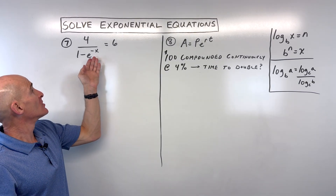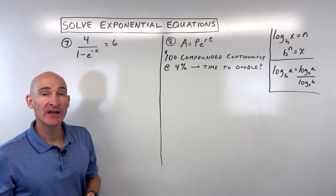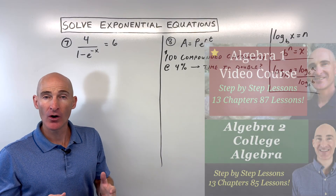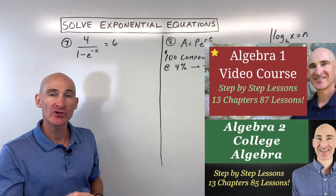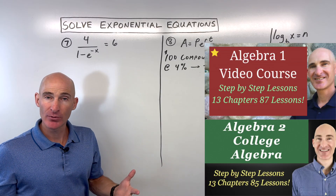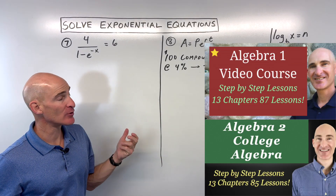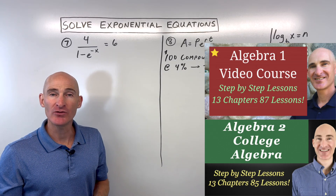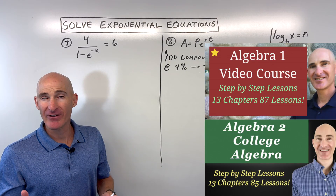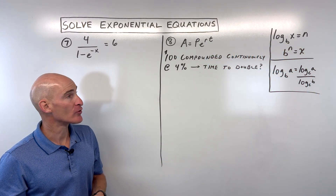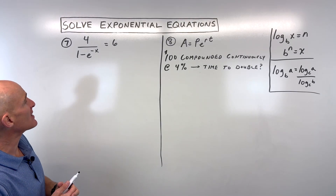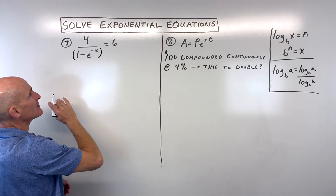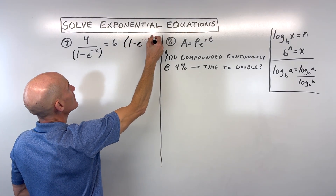Let's continue with number 7. What I would do is multiply both sides by the denominator, 1 minus e to the negative x, on the left side and the right side to keep it balanced.